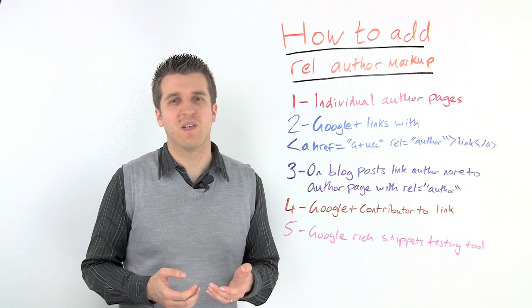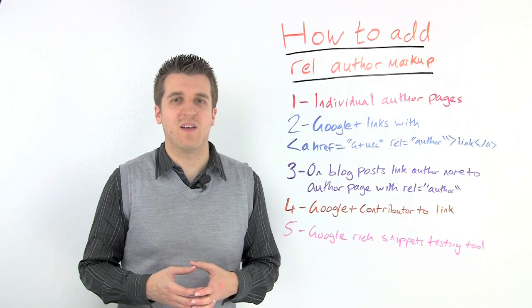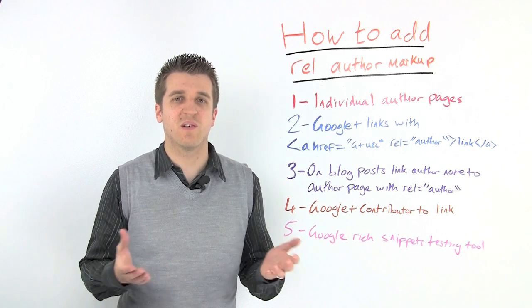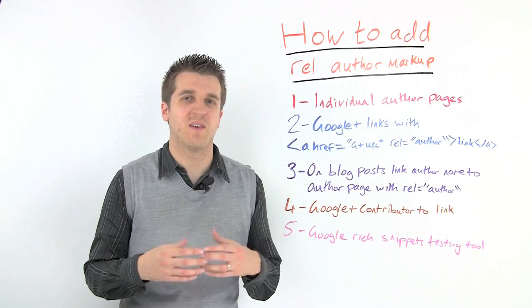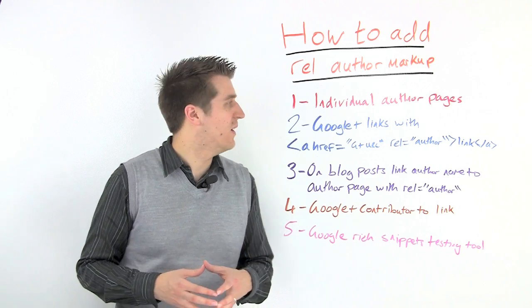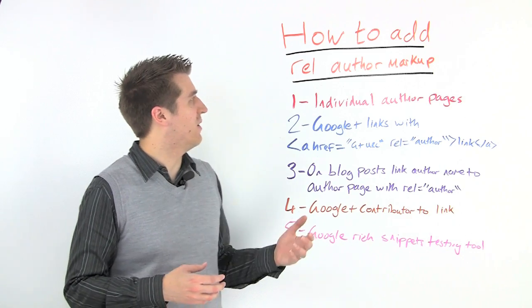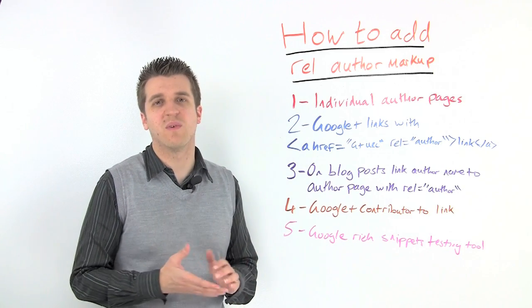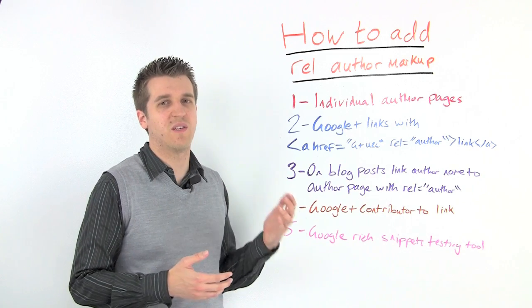What this does is it adds the author photo next to their results and also shows how many circles they're in on Google+, so it can add an authority factor. To add rel author markup is actually really simple, and all you need to do is follow these five steps.